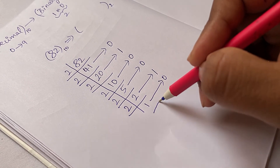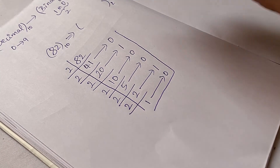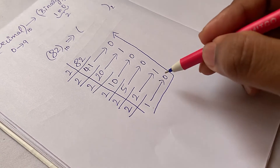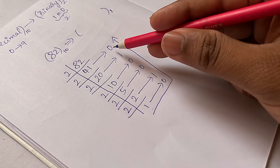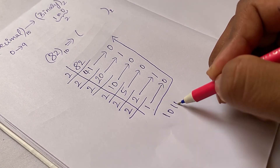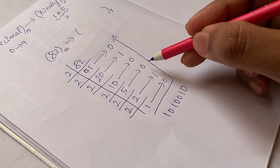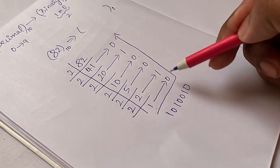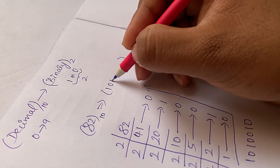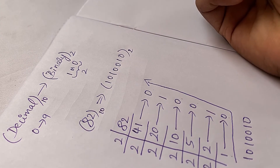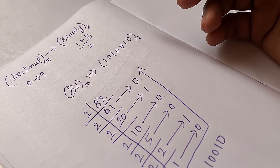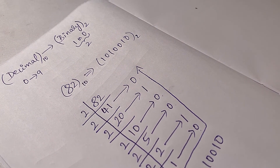Now, reading the remainders from bottom to top — starting from the last division upward — gives us the binary number. The equivalent binary format for decimal 82 is 1 0 1 0 0 1 0. You read the remainders in reverse order, starting from the bottom, to write this binary number.